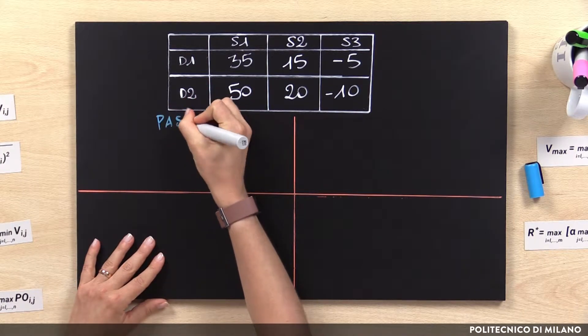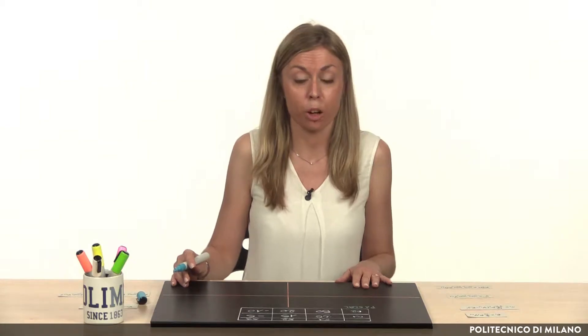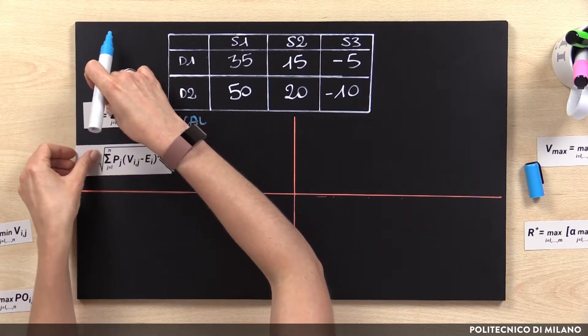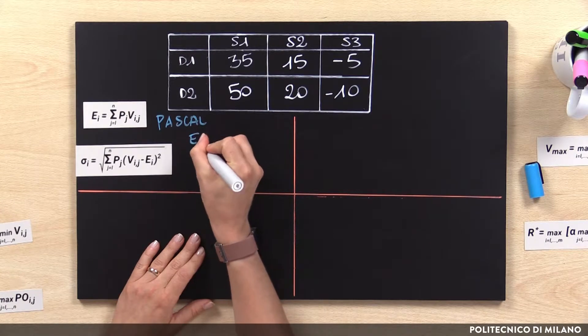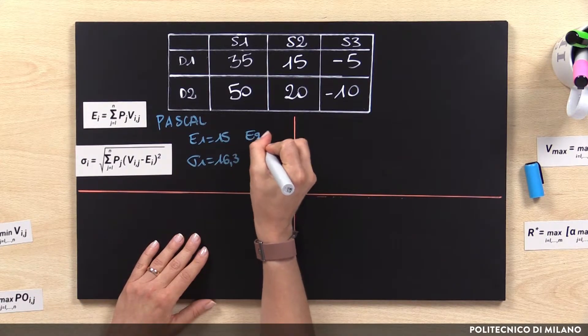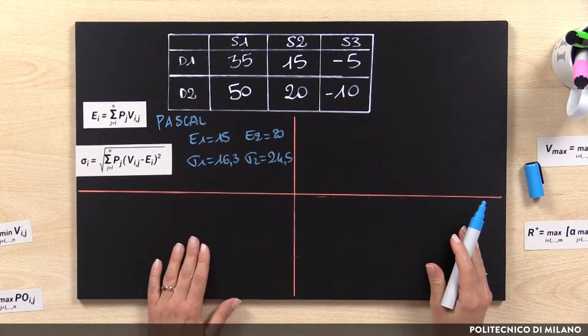The first criterion is called the Pascal criterion, and aims at considering all the scenarios as equally likely. This criterion manages a problem in an uncertain environment such as one in a risky environment, by giving estimated equal probability to each scenario. In our example, we give a probability of 33% to each scenario, and we are now able to compute both the expected value and the standard deviation, which are respectively 15 and 16.3 for decision 1, and 20 and 24.5 for decision 2. The decision maker can then use the same criteria seen for risk.